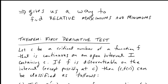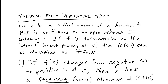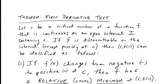So the first derivative test — this is called the first derivative test because it's using the first derivative to test something. Let c be a critical number of a function f that is continuous on an open interval I containing c. If f is differentiable on the interval, except possibly at c, then the point (c, f(c)) can be classified as follows.